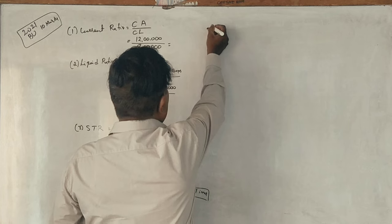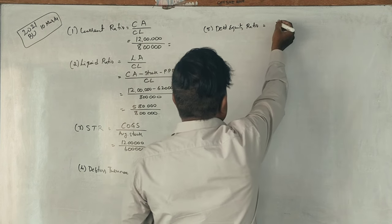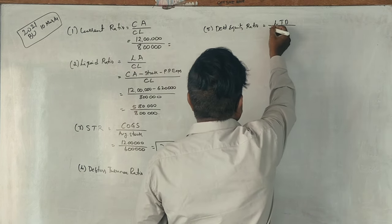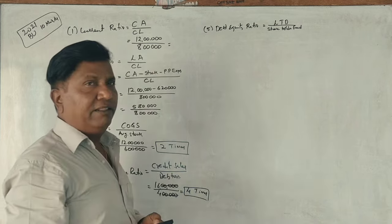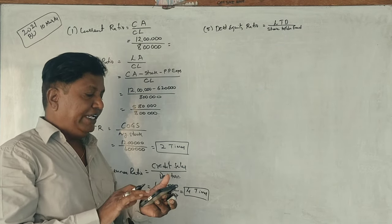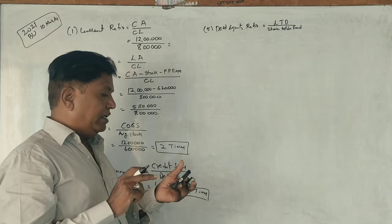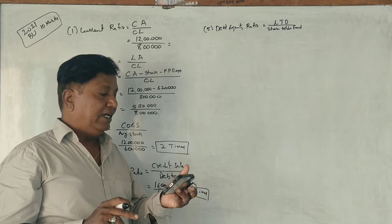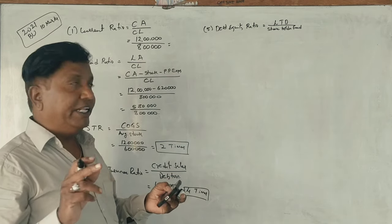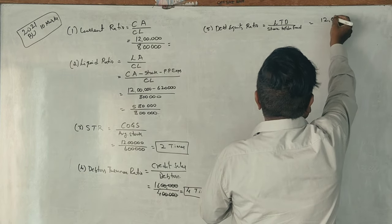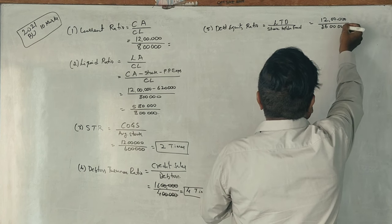Next, debt equity ratio. The formula is long term debt divided by shareholders fund. Shareholders fund includes equity capital of 10 lakhs, preference capital of 8 lakhs, and reserves and surplus of 8 lakhs, totalling 26 lakhs. Long term debt is debentures of 12 lakhs. So the debt equity ratio is 12 lakhs divided by 26 lakhs, which equals 0.46 is to 1.